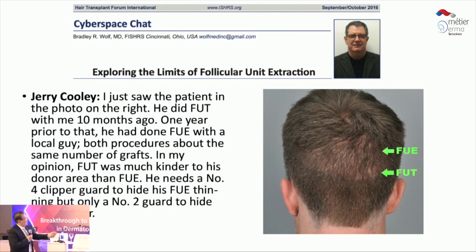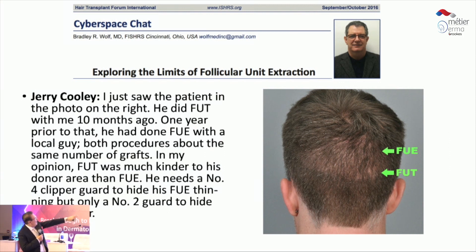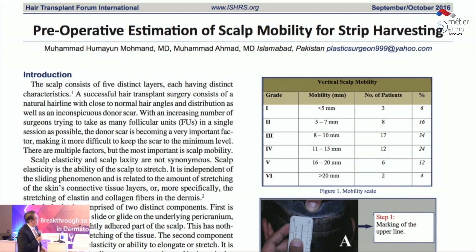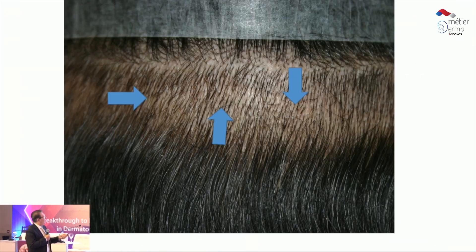This shows the donor area comparing FUE at the upper part and FUT or strip method at the lower part — a beautiful paper by Bradley Wolf. Jerry Cooley mentioned this is one of his patients. Once you understand that, the other important factor is the strip method and how to do it so your scars are really minimal.